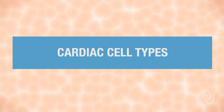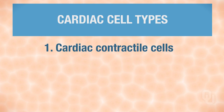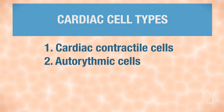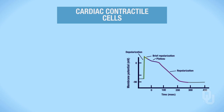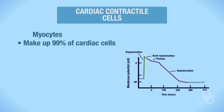In the heart, there are two different cardiac cell types: the cardiac contractile cells and the autorhythmic cells. The cardiac contractile cells are also called myocytes. The cardiac contractile cells make up the majority of the cells found in the heart, and they are located in the myocardium — they are cells within the muscle of the heart.